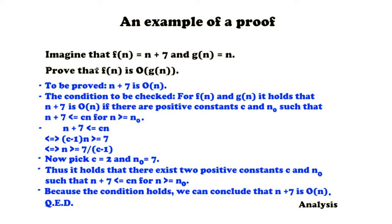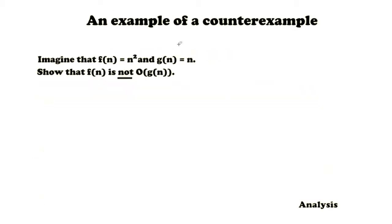That was just an example of a proof. Now let's have a look at an example of a counterexample. Imagine that f(n) is equal to n squared and g(n) is n. Now show that f(n) is not O(g(n)).